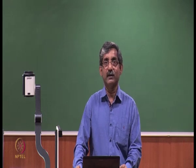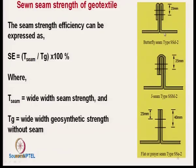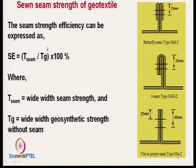There are different types of seams: butterfly seam, J seam, and flat or prayer seam type. Seam efficiency is the ratio of strength at the seam portion to the normal tensile strength of the geotextile without a seam.